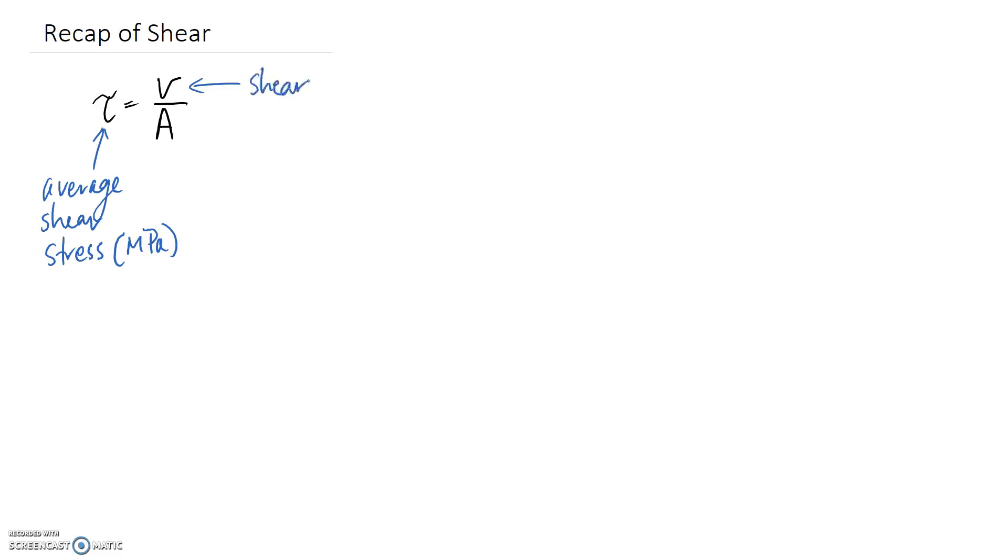V is your shear force, and it's a force, so it's measured in newtons. And A is your cross-sectional area for your member, and you're probably going to want to work with that in millimetres squared.